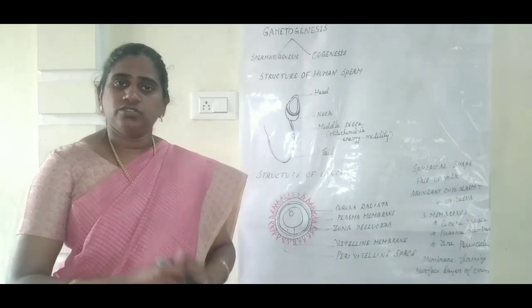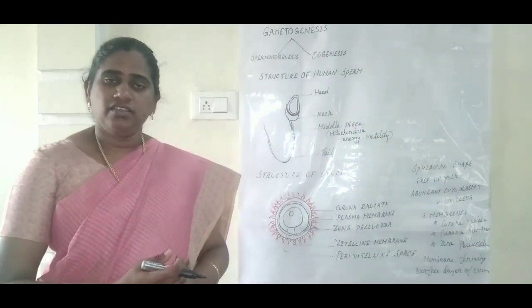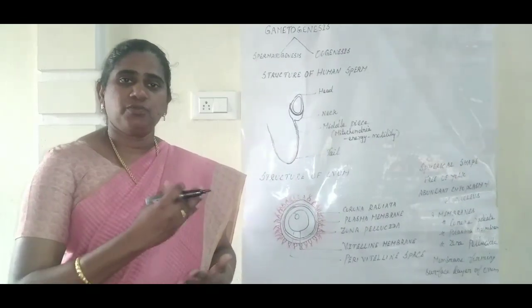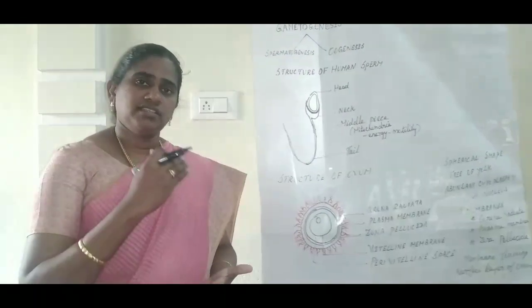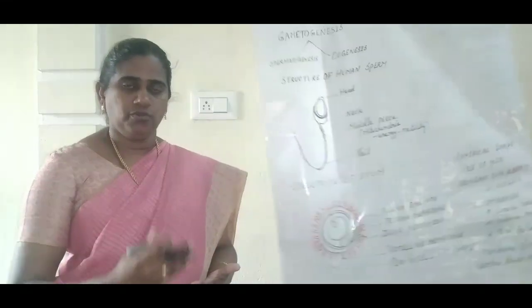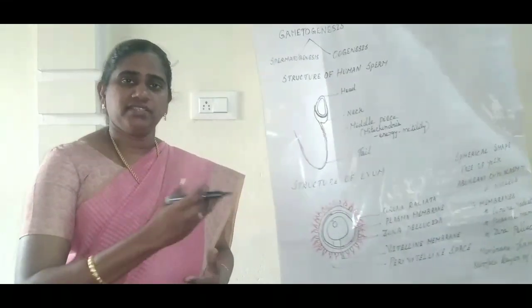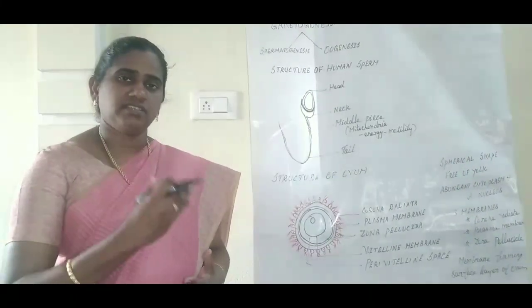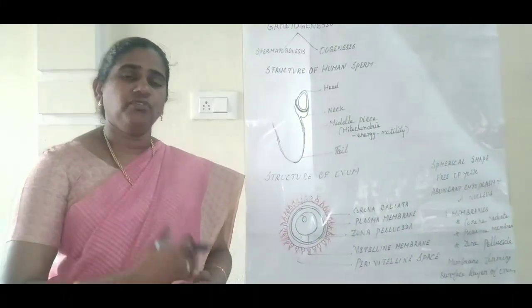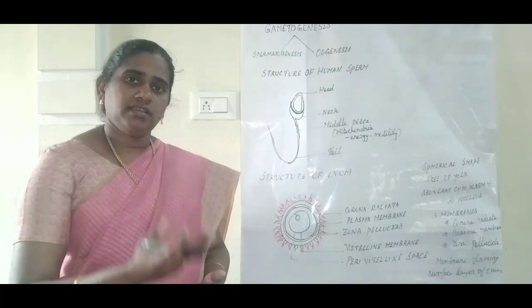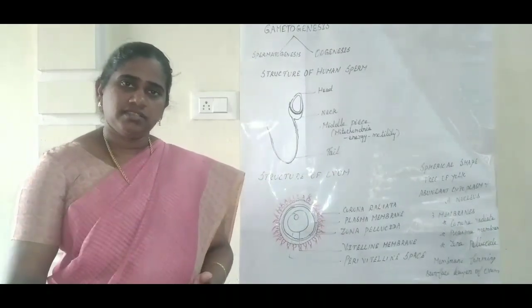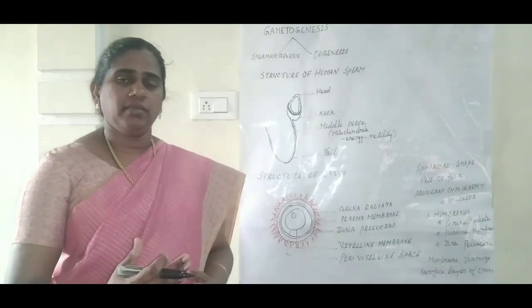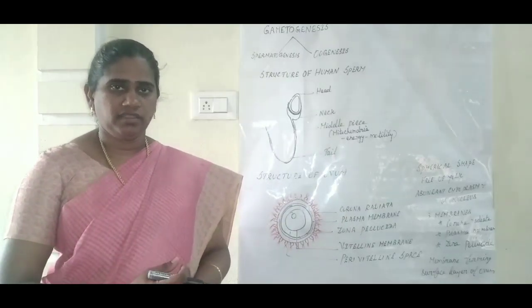Okay children. In today's session, we have learnt about the fertilization process in plants, then sexual reproduction in humans — under which we studied the structure of testis, structure of ovary, the gametogenesis process, and the structure of the male gamete sperm and the female gamete ovum. Thank you.